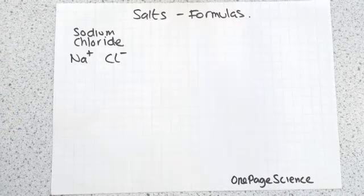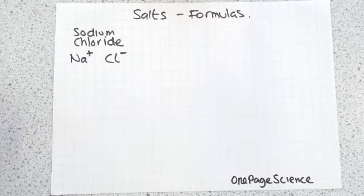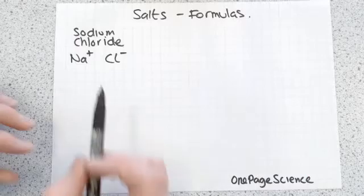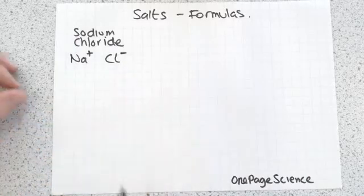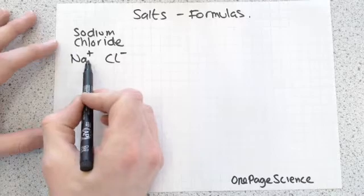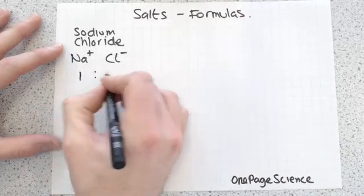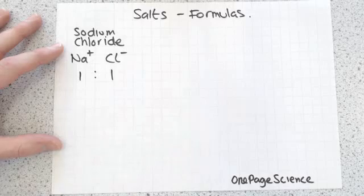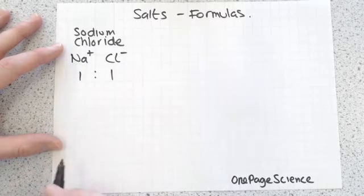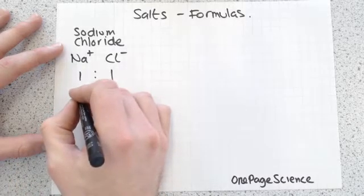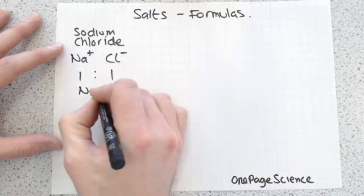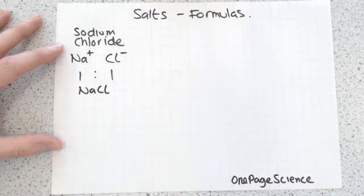To work out the formula you've got to remember that all salts are overall neutral in terms of their charge. Our challenge now is to get a combination of sodiums and chlorides to be neutral. If we have sodium +1 and chloride -1, we're going to have a ratio of one to one. For every one sodium there's one chloride, so the formula for sodium chloride is NaCl.